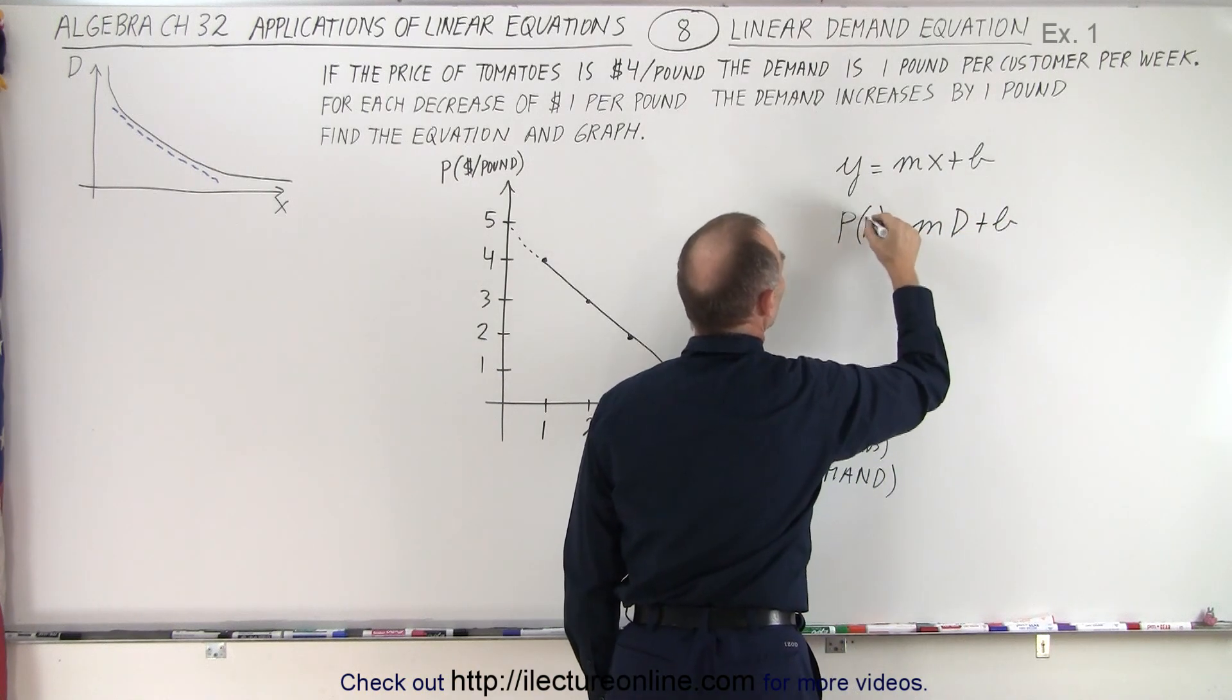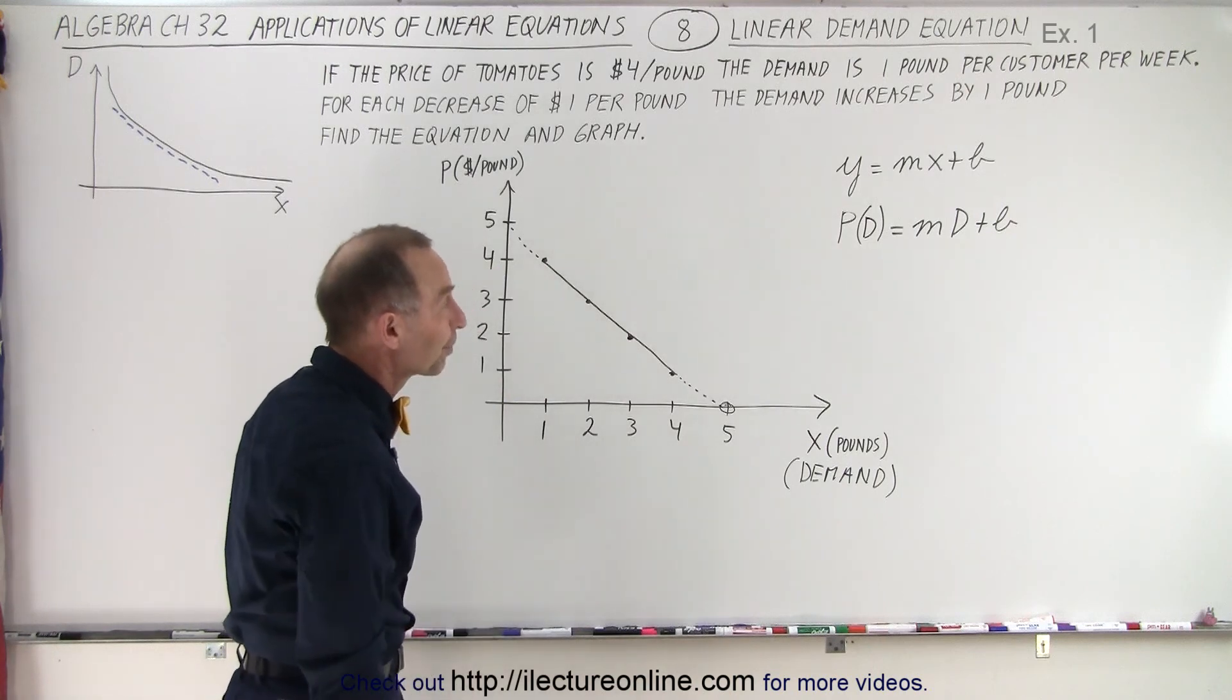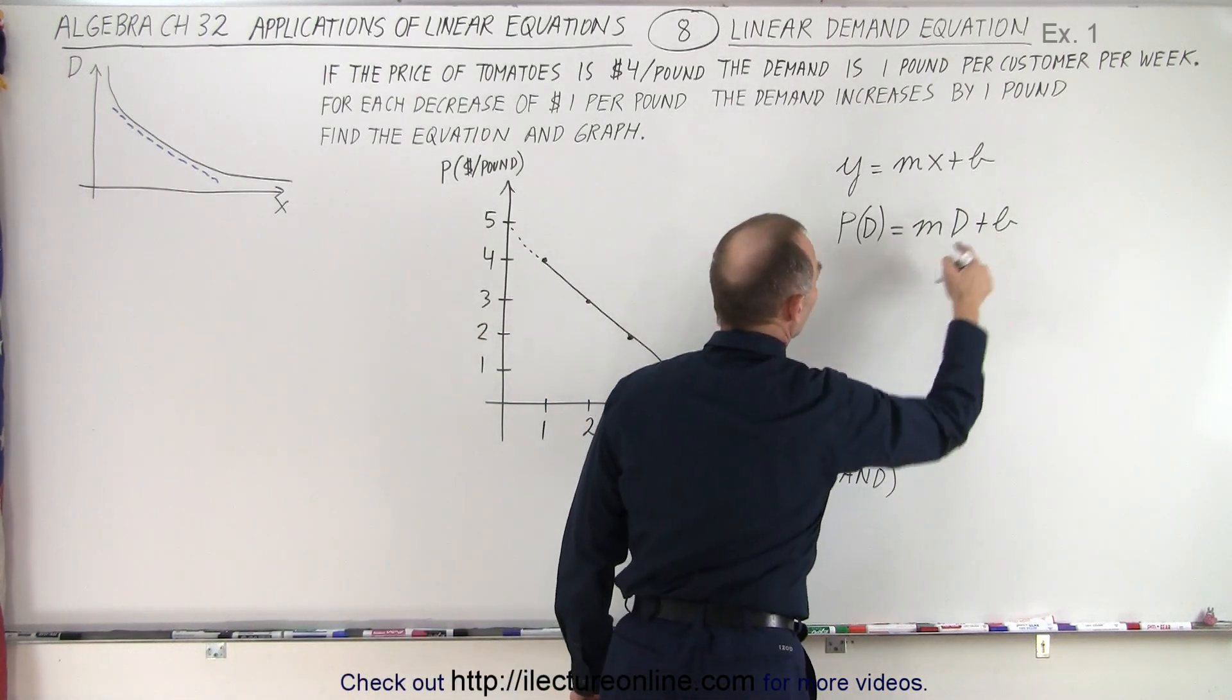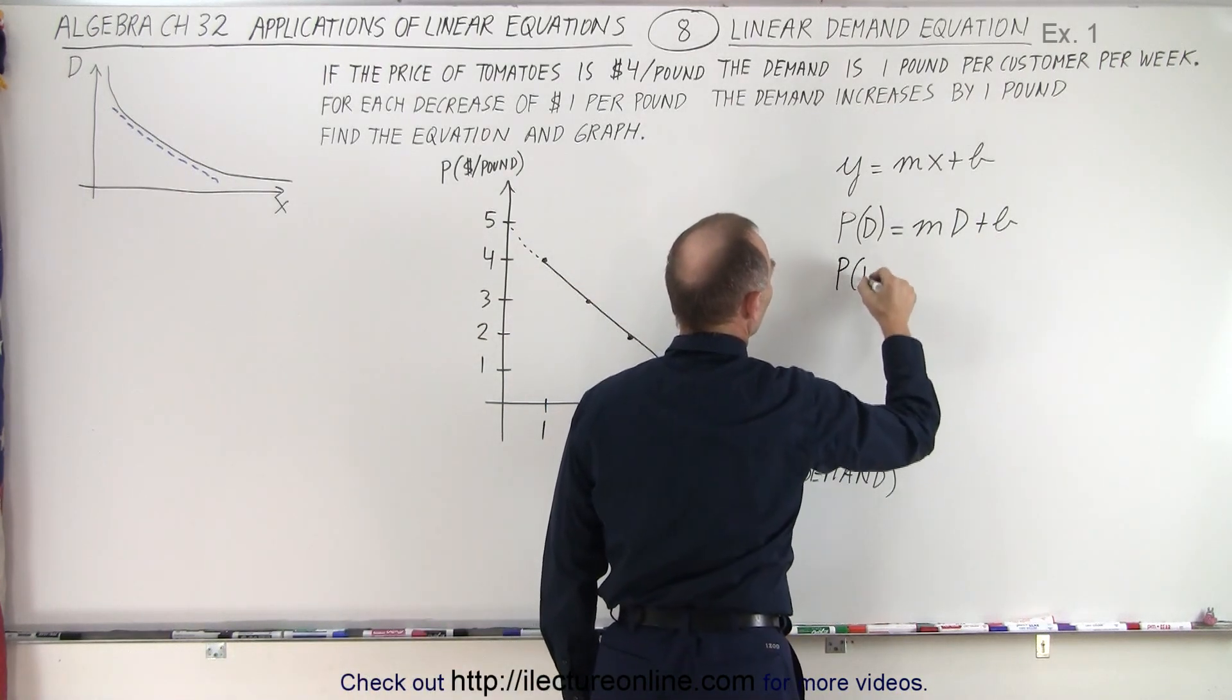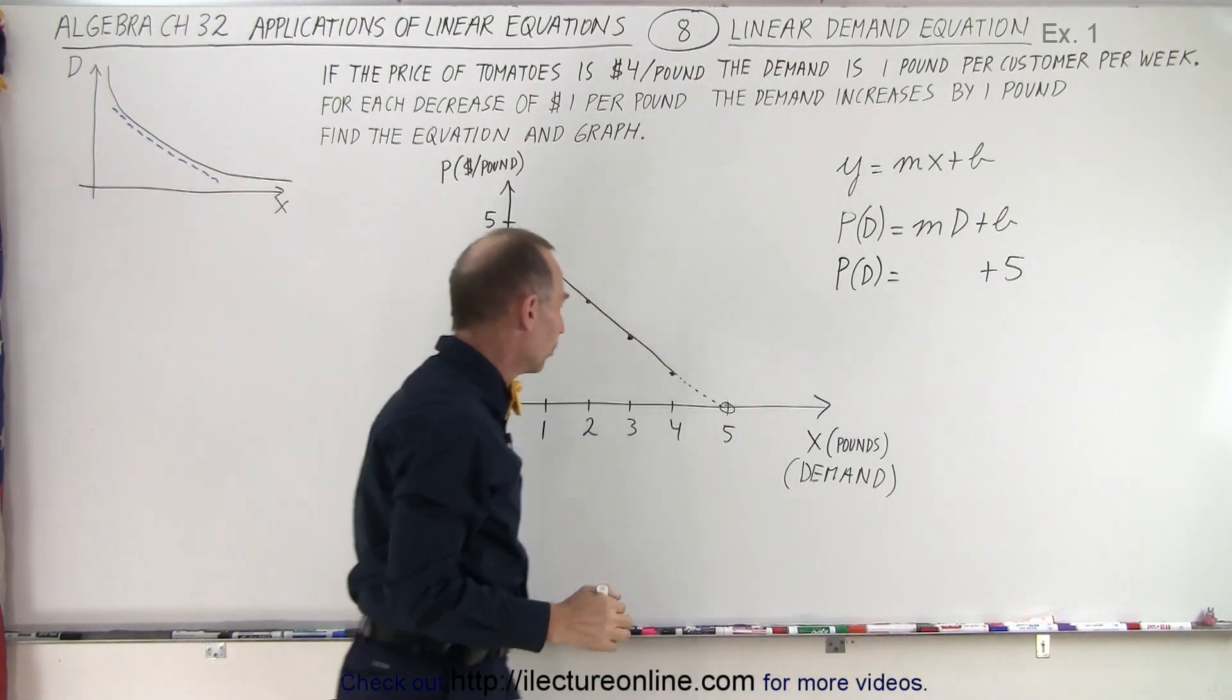And so then we can say that the price is a function of demand. But we realize in real life, demand is a function of price. Okay, so first of all, the intercept is going to be at 5. So we're going to replace b with 5. So p as a function of demand is equal to, let's plug a 5 in there.